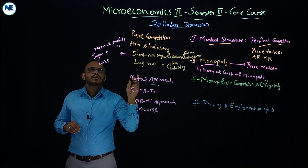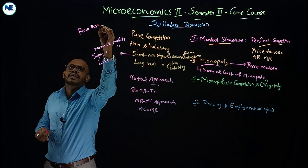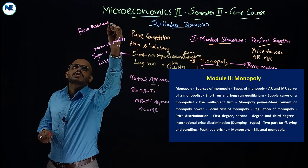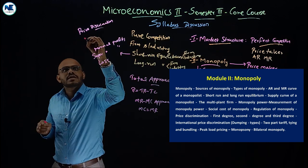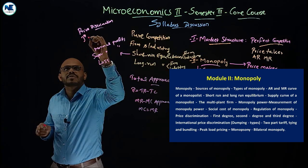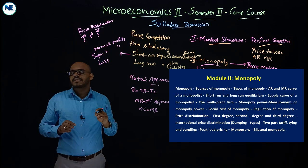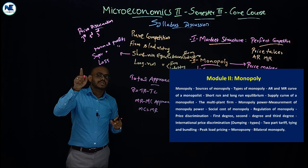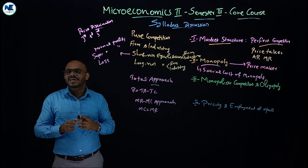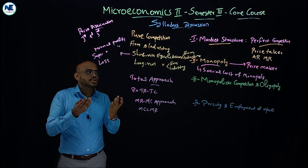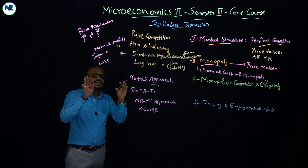For monopoly, a very important area is price discrimination. This is expected as a paragraph-type question. We focus on first degree price discrimination, second degree price discrimination, and third degree price discrimination. Second module also covers bilateral monopoly, monopsony, social cost of monopoly, and sources of monopoly.